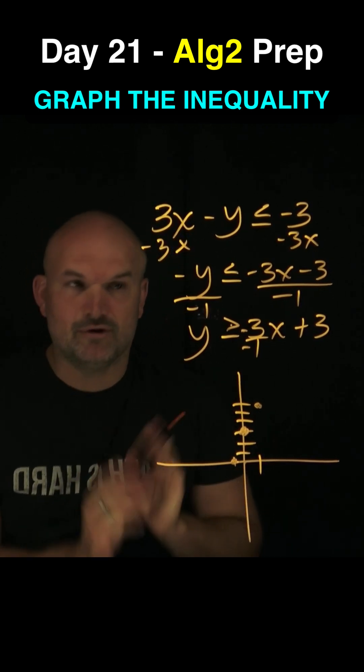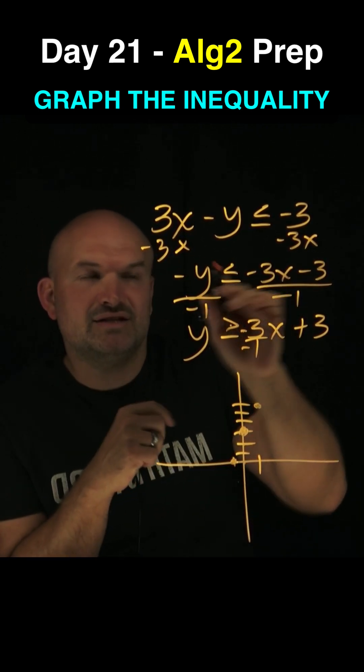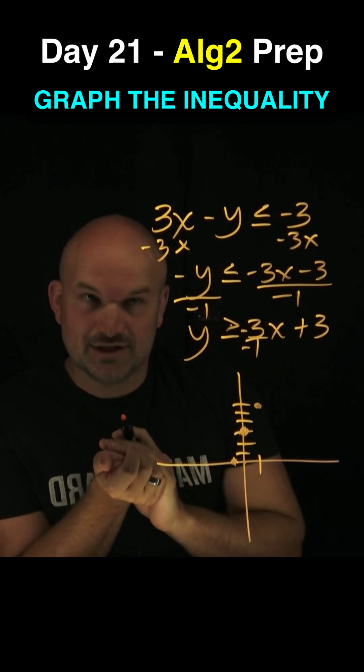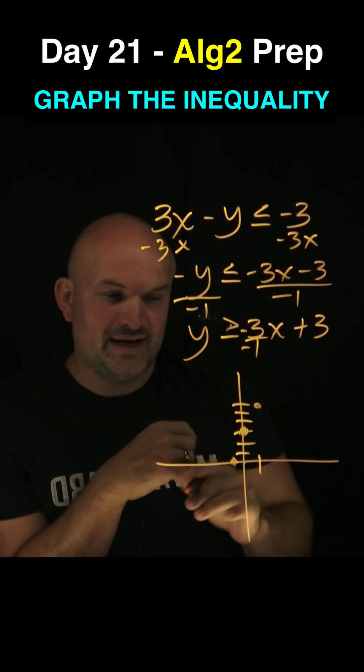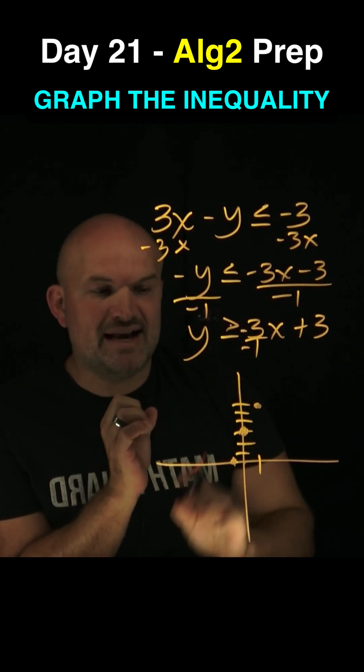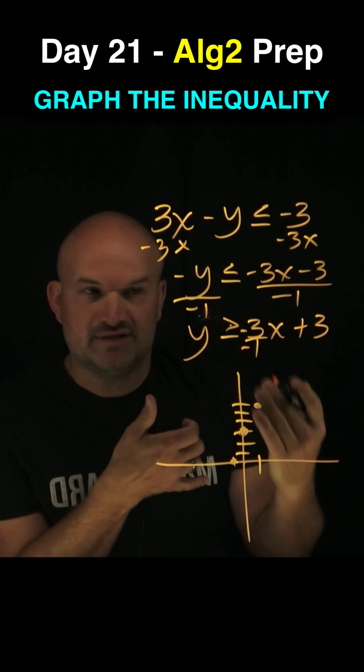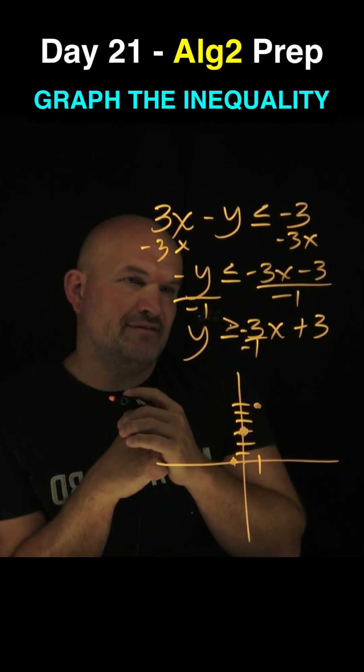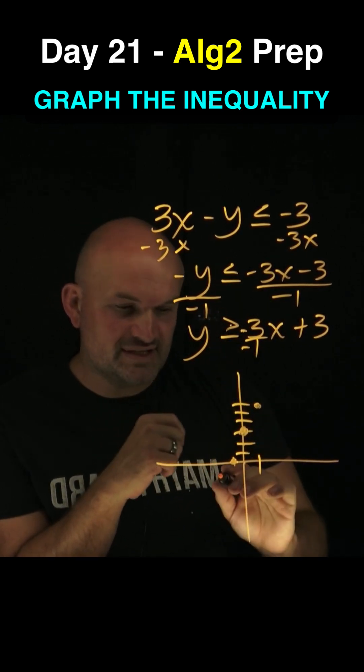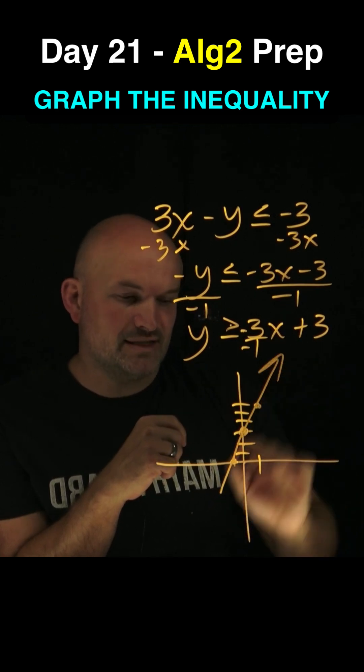Now I'm going to go ahead and graph the line. But remember, we have to make sure, is this line going to be included or not included? If it was less than or greater than, it would be a dashed line. That means that any values on that line are not going to be included. In this case, though, we have greater than or equal to. So therefore, since it is equal to, we're going to have a nice little solid line.